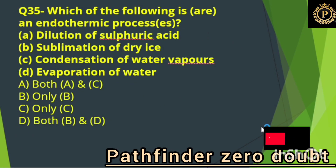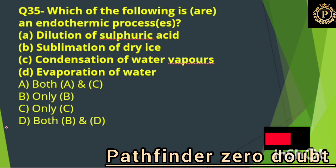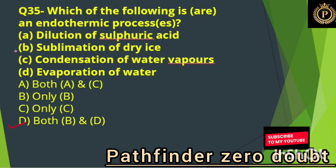Which of the following is an endothermic process? Option D, both B and D — sublimation of dry ice and evaporation of water.